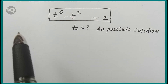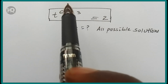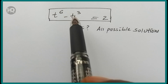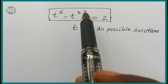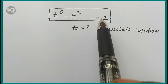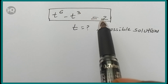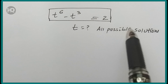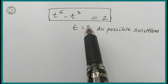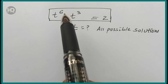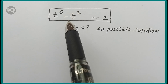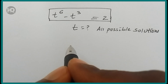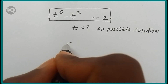Hello everyone, welcome. We will solve the problem t to the power of 6 minus t to the power of 3, which is equal to 2. Find all possible values of t which satisfy the given problem. So let's go to the solution.